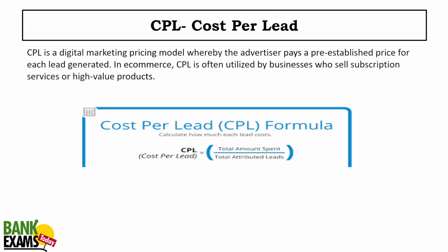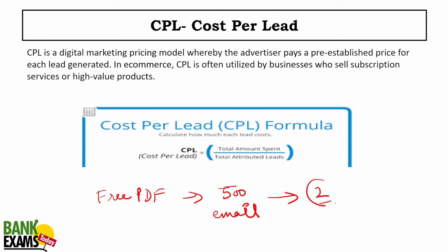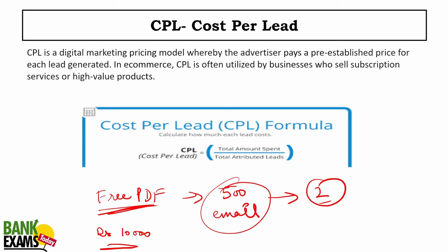Cost per lead: a lead is not a sale. For example, if I give you a free PDF and 500 students gave me their email address to download it, those are 500 leads. I then send promotional emails — if 2 students purchase, those are conversions. If I spent 10,000 rupees creating the PDF and made 8,000 rupees, I'm loss-making. I need at least 3 sales to be profitable. Cost per lead measures how much you pay to get one lead.